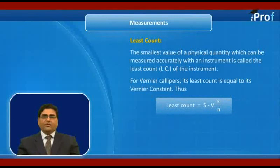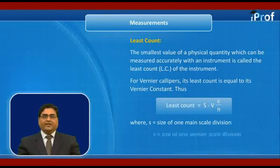Where S equal to size of one main scale division and V equal to size of Vernier scale division. N equal to number of divisions on Vernier scale.